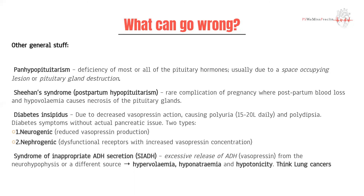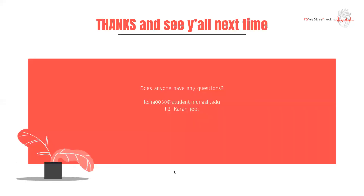Finally, syndrome of inappropriate ADH secretion (SIADH) presents with reduced urine output and is typical of paraneoplastic cancers or tumors. It's characterized by hypervolemia because you're retaining too much fluid, dilutional hyponatremia — where the actual sodium amount is still okay but the concentration drops due to excess intravascular fluid — and hypotonia related to the hyponatremia. Always think lung cancers. That is the end of our lecture on pituitary pathology. Thank you — any questions, send me a message, and please look after yourself and your loved ones.